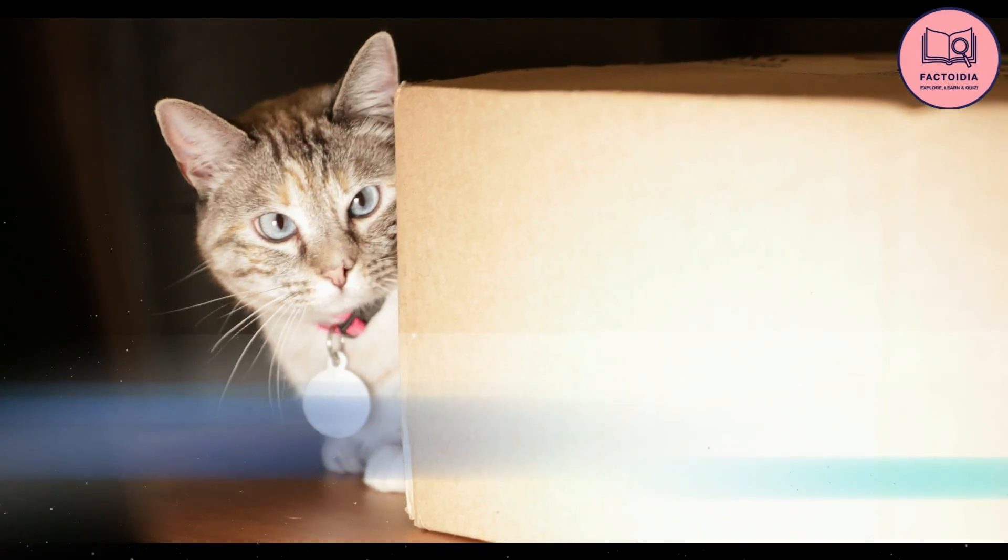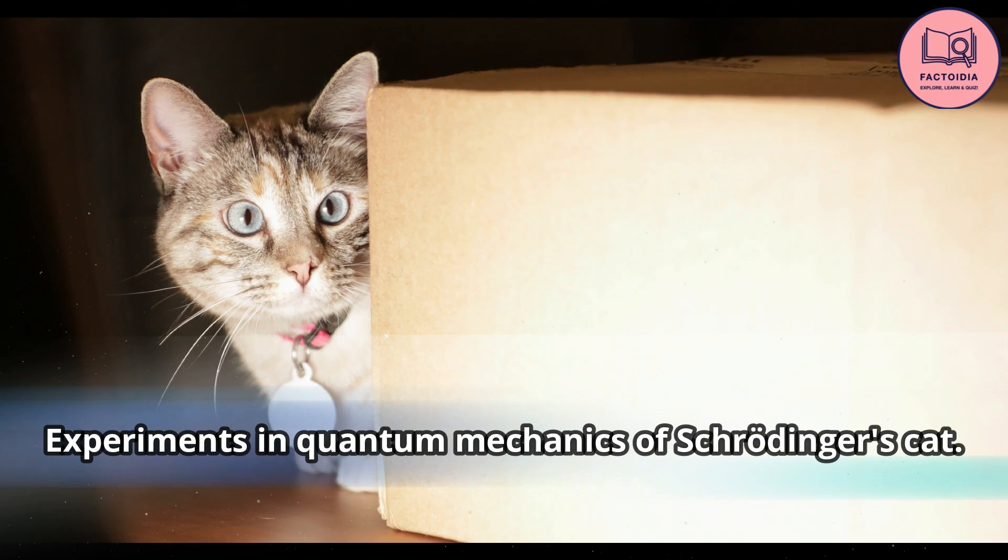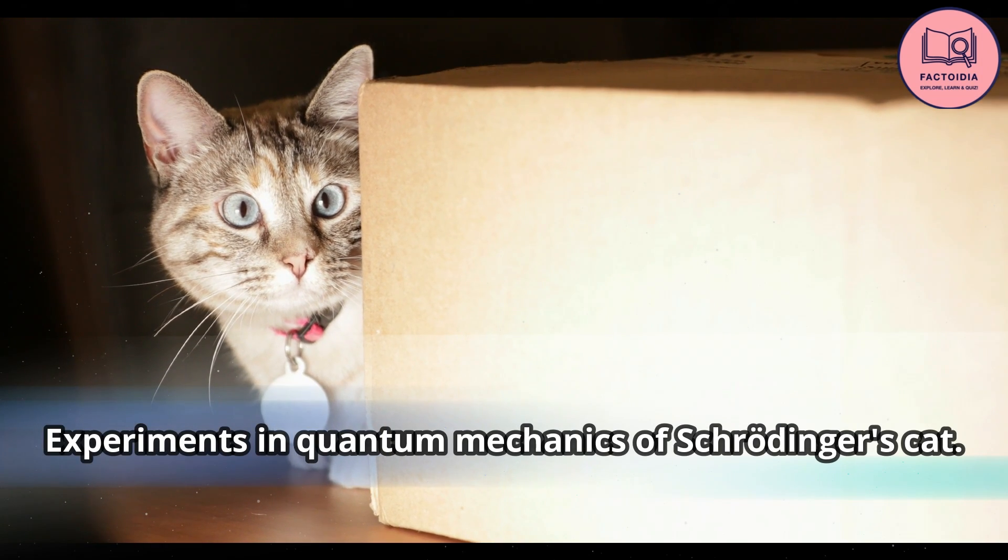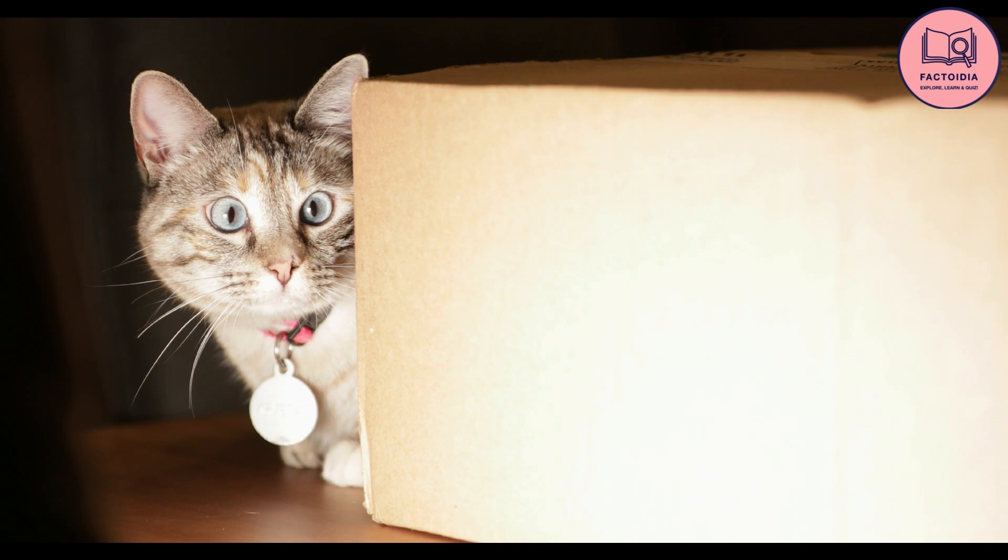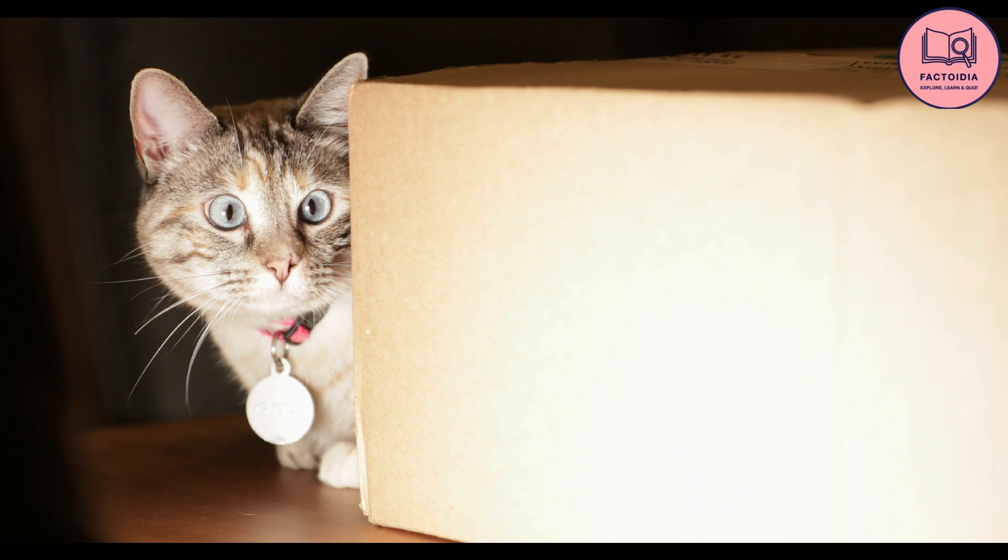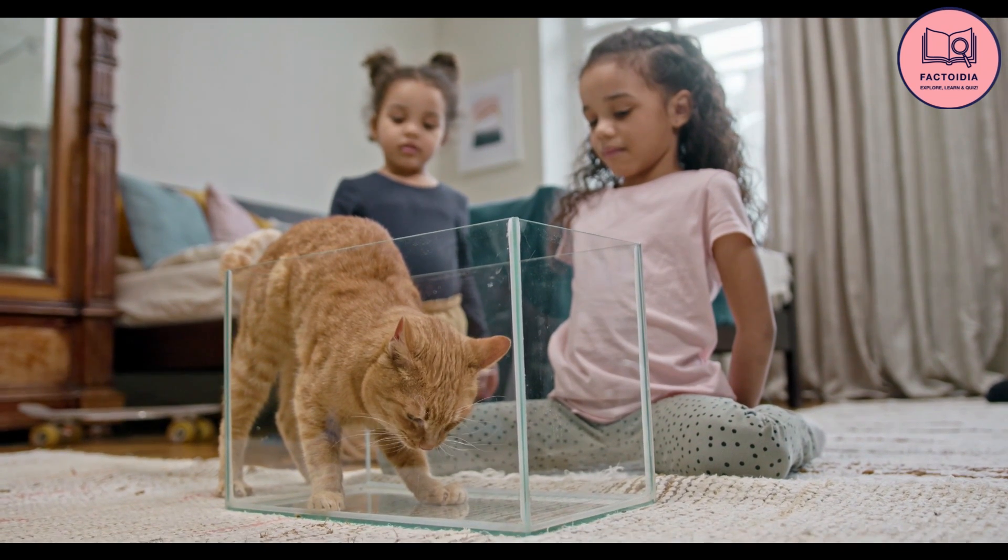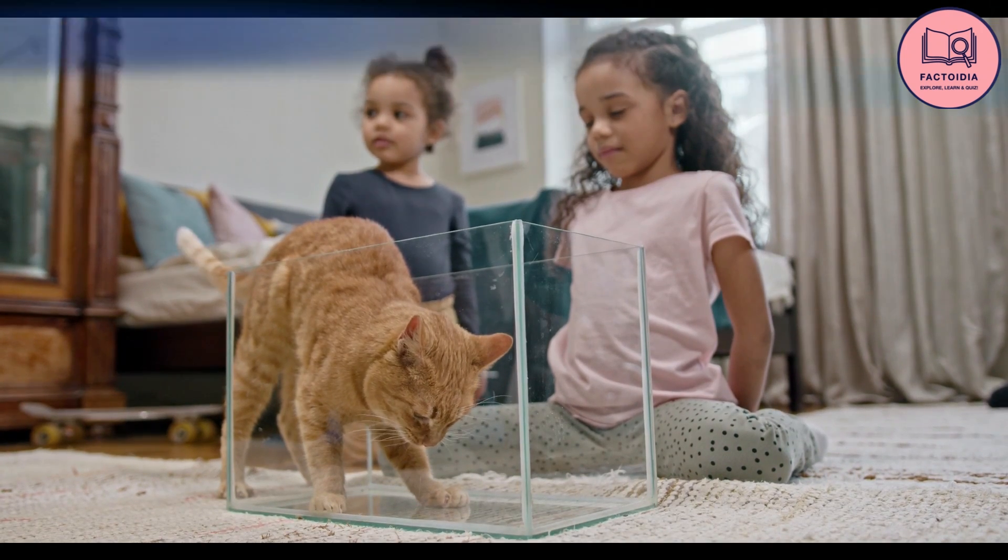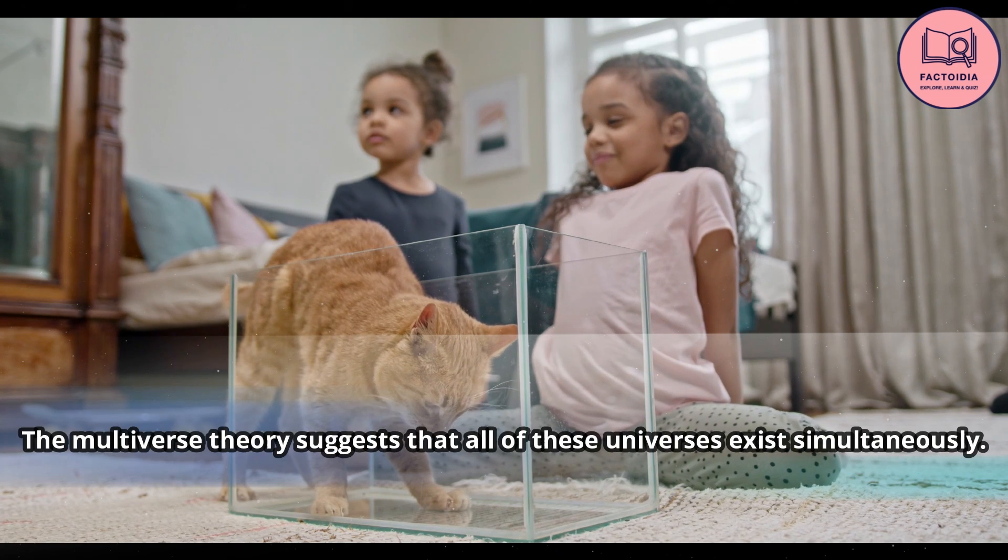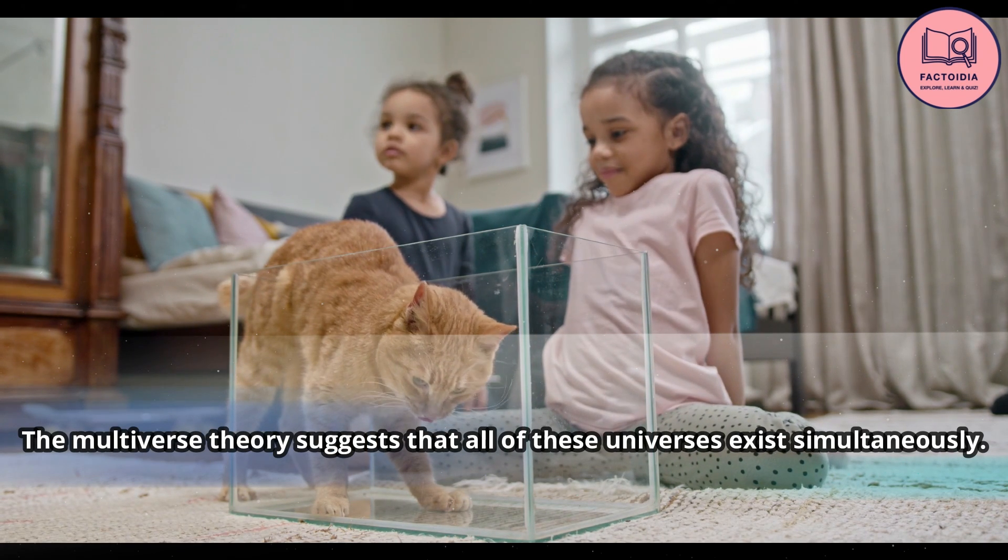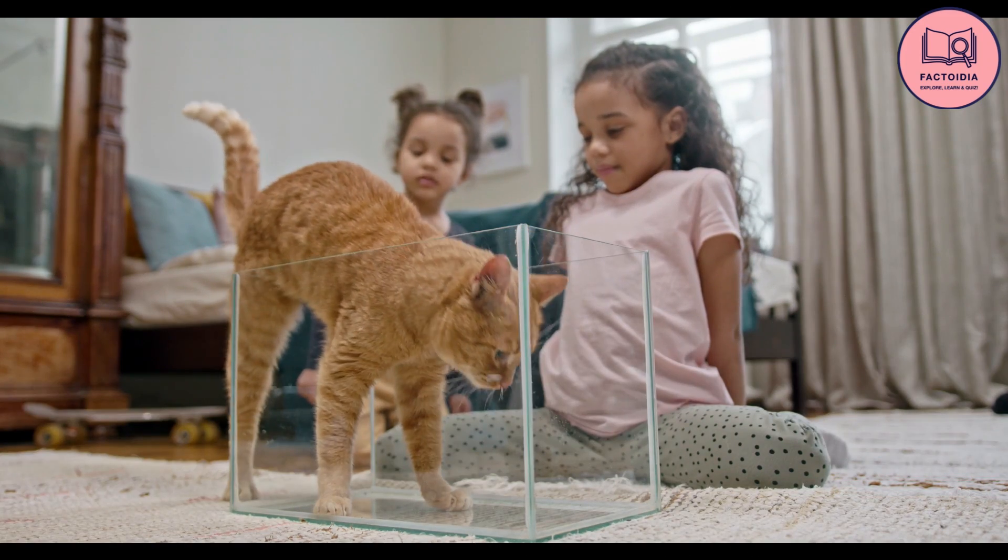One of the most famous thought experiments in quantum mechanics is Schrodinger's cat, where a cat is placed in a box with a vial of poison that may or may not be released. According to quantum mechanics, the cat is both alive and dead until the box is opened, and the cat's state is observed. In the same way, there could be many boxes, or universes, with different versions of the cat, each with its own set of outcomes. The multiverse theory suggests that all of these universes exist simultaneously.